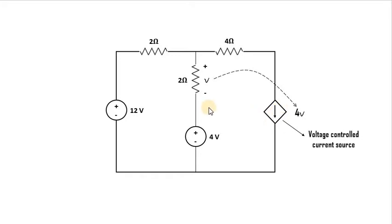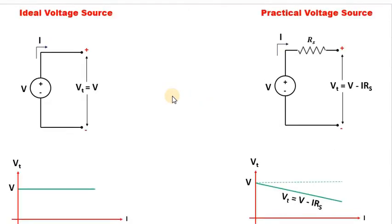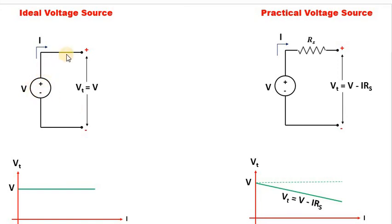Let us now move to the difference between an ideal voltage source and a practical voltage source. Here you can see two circuits: the first is for the ideal voltage source and the second is for the practical voltage source. In the ideal voltage source, the internal resistance is zero — zero resistance means a short-circuited path — so no resistance is shown in series with the source.